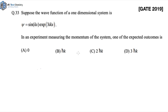This question is about finding momentum, and they're asking about the expected outcome. Expected outcome generally means that if you apply the operator related to what you want to measure — since we have to measure momentum, we apply the momentum operator on this wave function. Whatever eigenvalue I get is going to be my expected outcome.